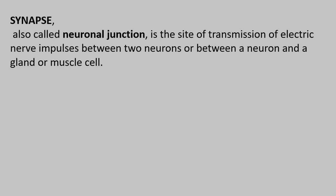How do we define the synapse? Synapse is a neuronal junction. It is a site of transmission of electrical impulses, nerve impulses between two neurons.